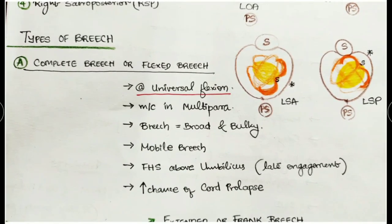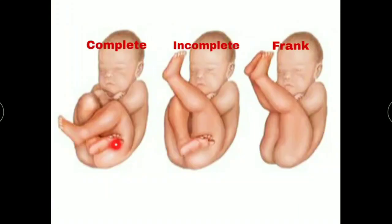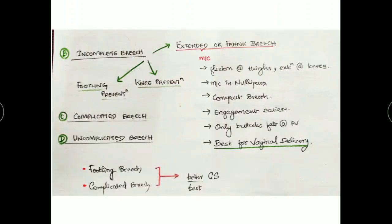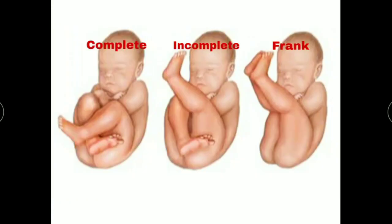Complete breech or flexed breech means the child is at universal flexion — flexion at the hip region, flexion at the knee joint, and the whole upper limb is also at flexion. This is the complete breech. Incomplete breech is not in a properly flexed position.